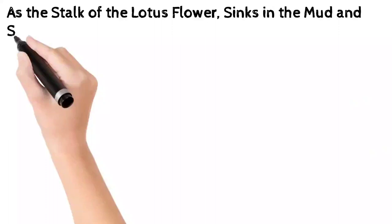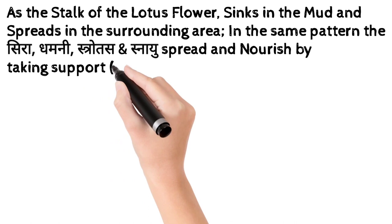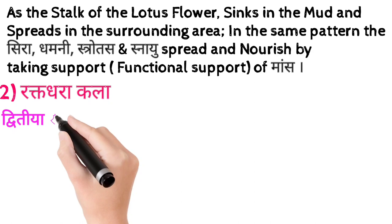As the stalk of the lotus flower sinks in the mud and spreads in the surrounding area, in the same pattern the Sirah, Dhamani, Srotas and Snayu, by taking the support of Kala, spread and nourish the mass. Nourishment is the functional support of this Kala.